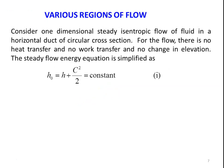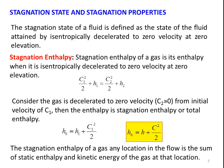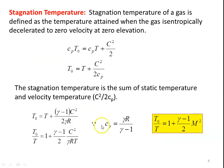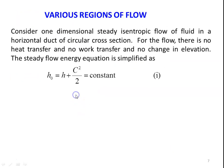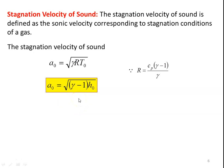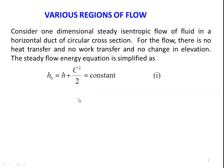Based on the discussion, we have the key stagnation equations: stagnation temperature T0/T = 1 + (γ-1)/2 · M²; stagnation pressure P0/P = (1 + (γ-1)/2 · M²)^(γ/(γ-1)); stagnation density and stagnation velocity of sound. These are all the important equations. Now, based on the total energy of the fluid, we will discuss the various regions of flow in gas dynamics. Consider one-dimensional steady isentropic flow of fluid in a horizontal duct of circular cross section.